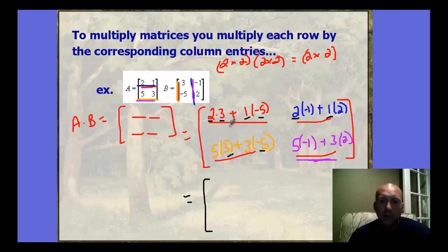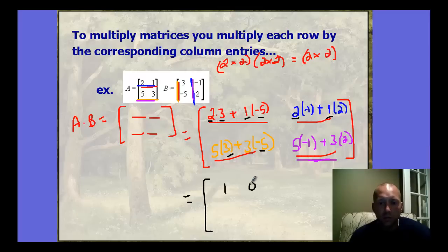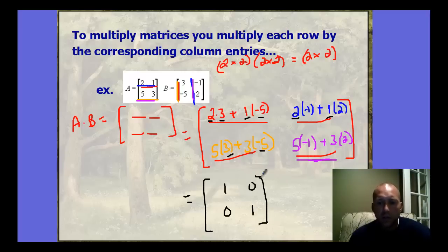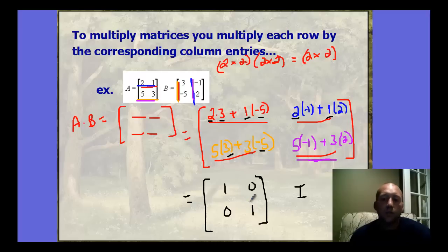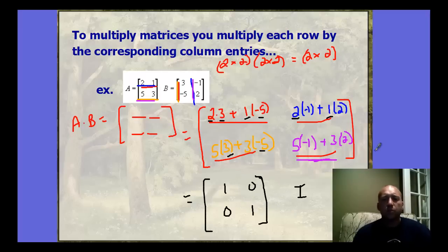Evaluating the results: 6 plus negative 5 equals 1; negative 2 plus 2 equals 0; 15 plus negative 15 equals 0; negative 5 plus 6 equals 1. The result is the matrix with 1, 0, 0, 1 — ones on the diagonal and zeros elsewhere. This is actually the identity matrix, which we'll define more later.